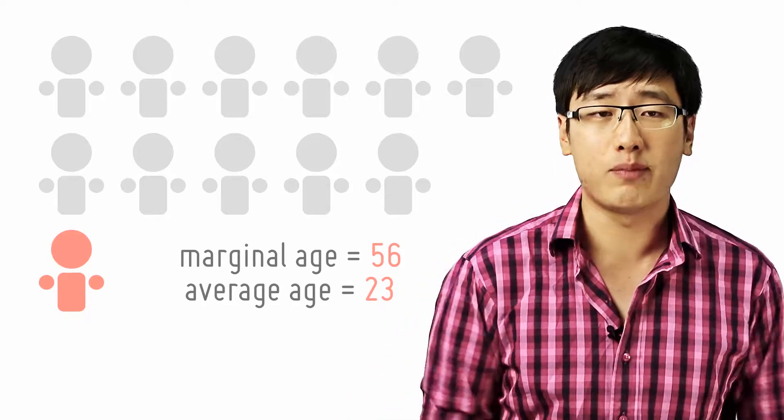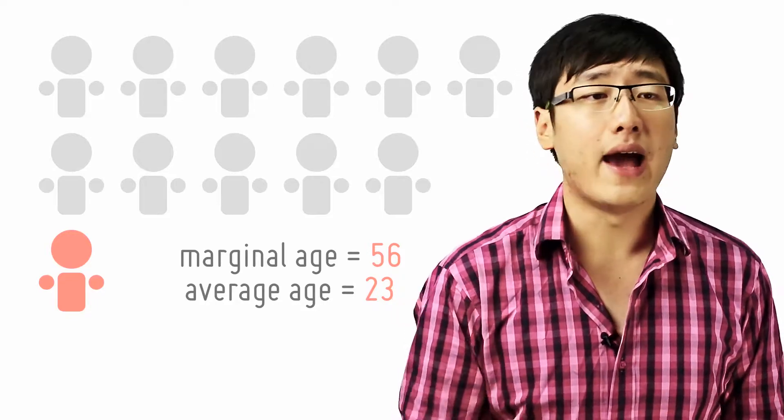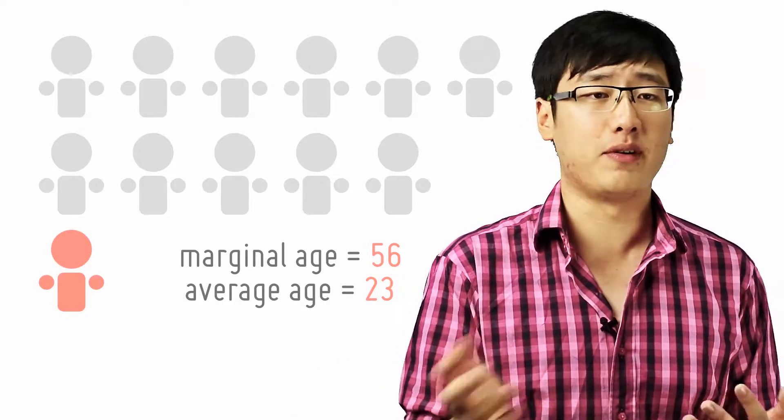Because you add everyone's ages up, which is 20 times 11 plus 56, and then you divide that by the total number of people in the room, which is 12. You get 23 years old.